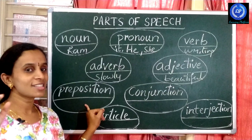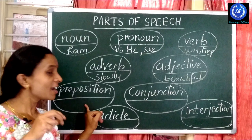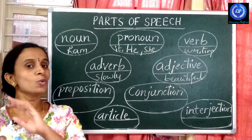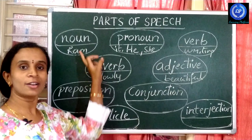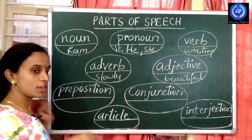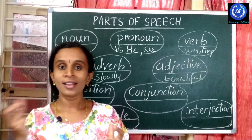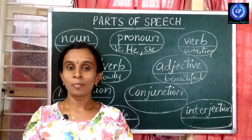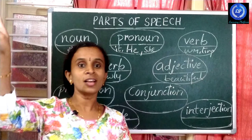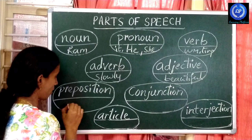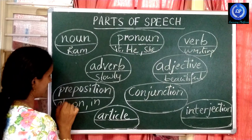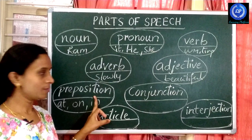Then preposition. A preposition is a word which relates two nouns or two pronouns. For example: a ball on the table, a bottle on the table, a clock in the wall. On, in — these are the prepositions.